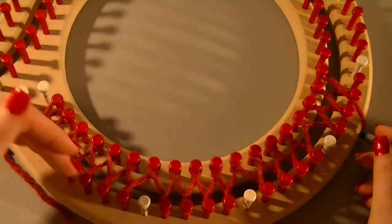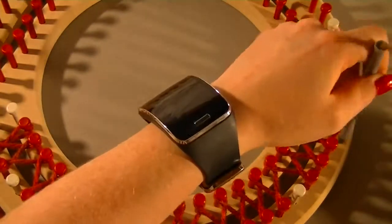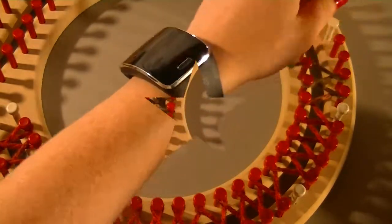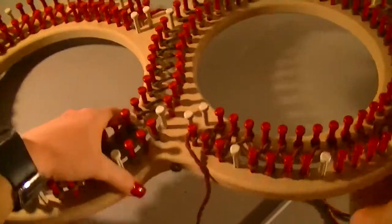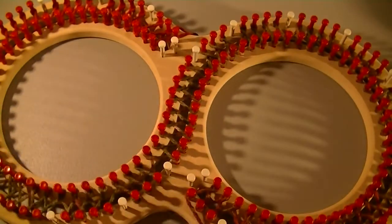You do this all the way around, then have that first row done. This is about what it's going to look like. Now at this point you have a couple of choices.